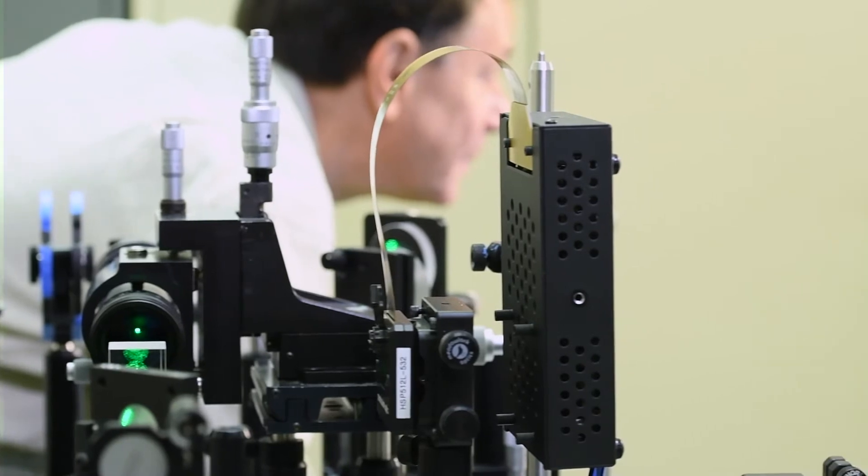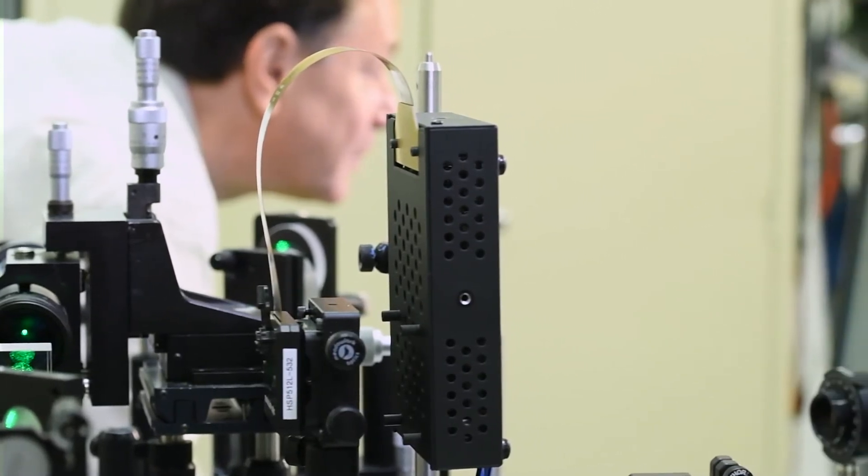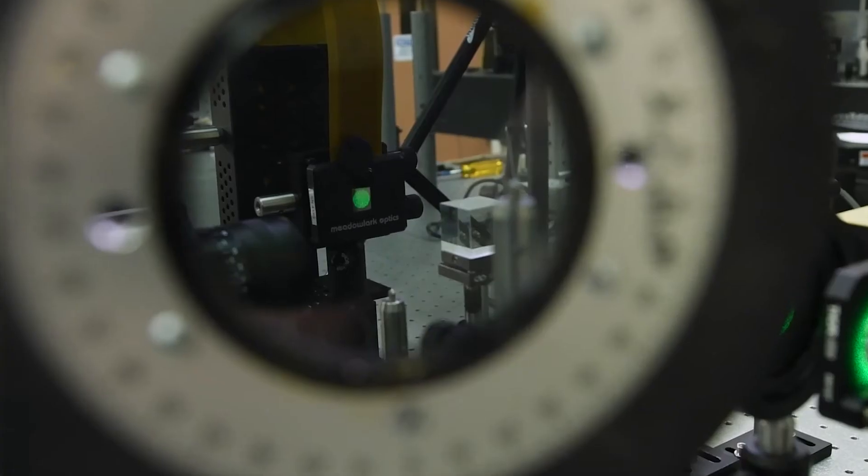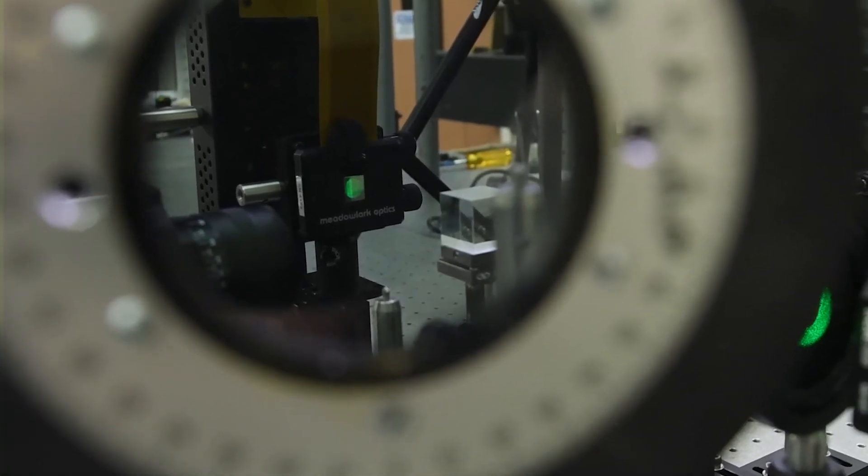That is used to create a hologram of that object, and that hologram is then imprinted on a device called a spatial light modulator. Think of an electronic version of a photographic negative. We illuminate the spatial light modulator with a strong laser beam.